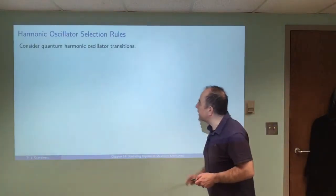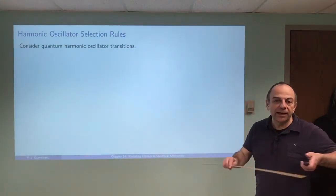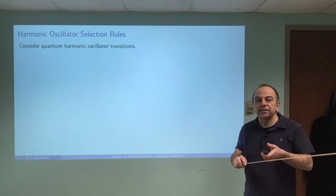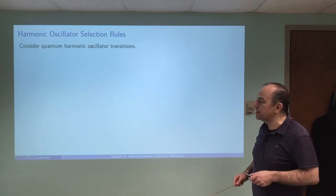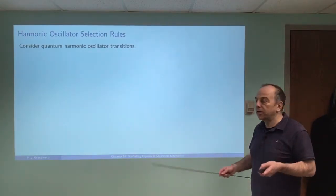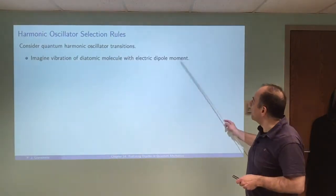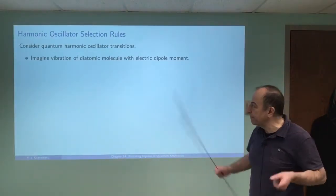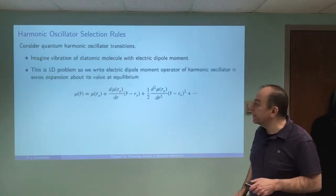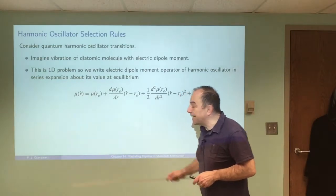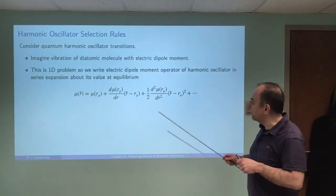So let's take, as an example, the quantum harmonic oscillator. We've already covered the quantum harmonic oscillator, but we didn't really look at the selection rules for transitions between levels as the oscillator emits or absorbs light. So let's take a diatomic molecule with an electric dipole moment that's vibrating and see if we can work out what those transition moments are.